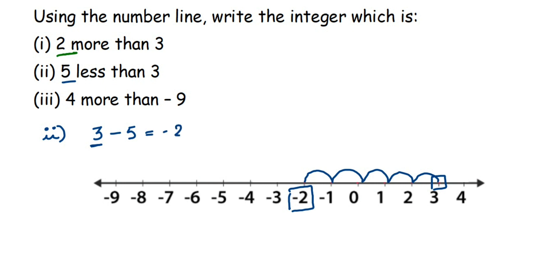Then the last question we have 4 more than minus 9. So let me erase this. So 4 more than minus 9. So minus 9 we have. To this, 4 more. So plus 4 we'll get.